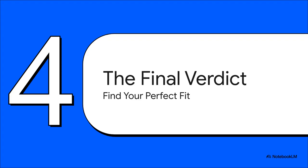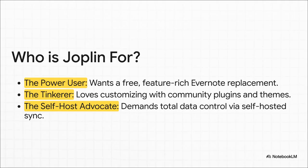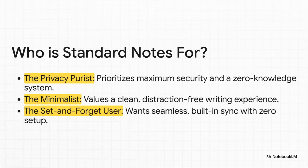Let's wrap this up and help you find your perfect fit, because the best app isn't about which one is better in a vacuum, but which one is better for you. Choose Joplin if you're a power user or a tinkerer at heart — if you want a free alternative to Evernote that you can customize endlessly with plugins, and especially if you value having 100% control over where your data is stored, then Joplin is without a doubt your champion. On the other hand, choose Standard Notes if you're a privacy purist or a minimalist. If your number one priority is security and you just want an app that works right out of the box with zero setup, giving you a clean, distraction-free space for your thoughts, then Standard Notes was literally built for you.